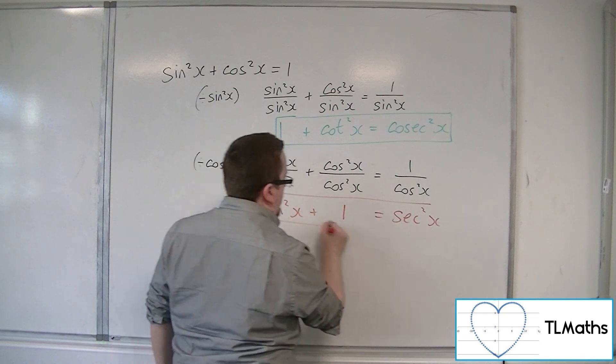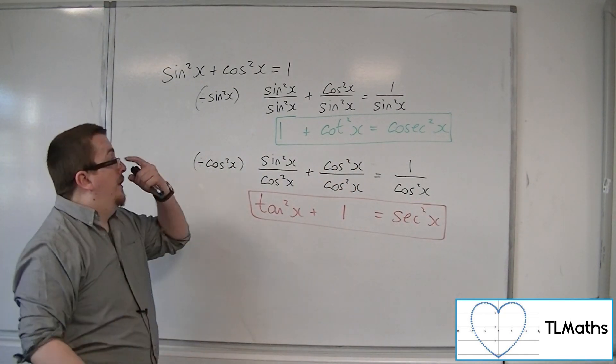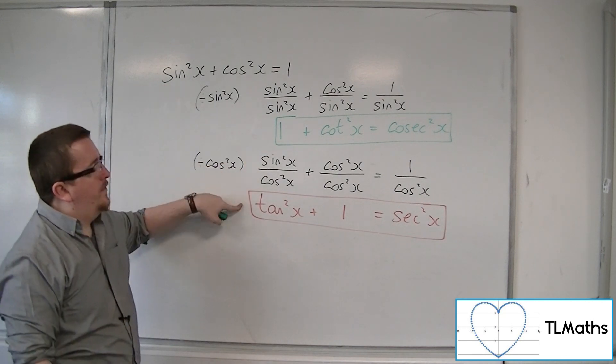And this is the second of the two new trig identities. So, we have 1, 2, and 3 here.